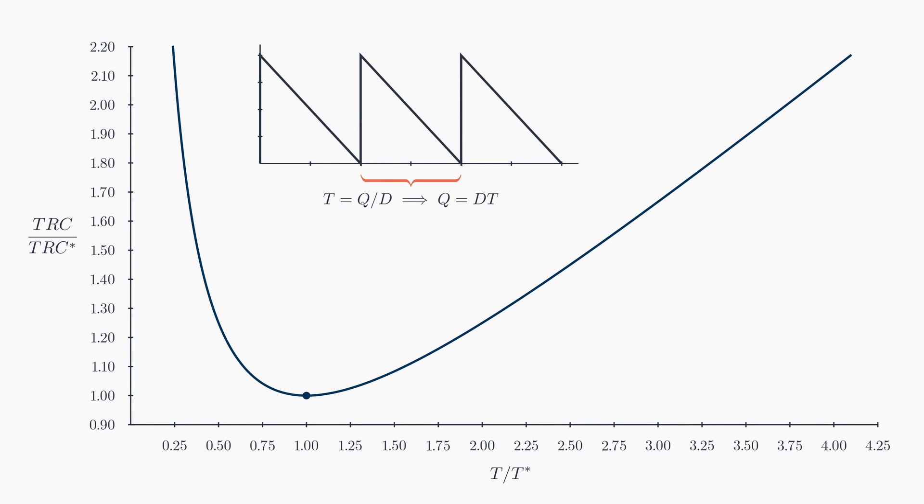Now, imagine TL turns out to be a fraction of T-star. Then, we're likely to uncover more cost-effective, feasible solutions by using multiples of TL. For instance, in this case, replenishing every 3 times TL turns out to be slightly less expensive than doing so every 2 times TL. Or, in a more fortunate scenario, it might even match T-star exactly, making T-star a feasible reorder policy, though such a coincidence is quite rare.